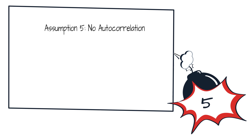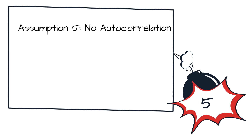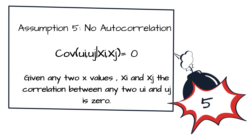The fifth assumption states that there is no autocorrelation between the disturbances. That is, Cov(ui, uj | xi, xj) = 0. Given any two x values xi and xj, the correlation between any two disturbances ui and uj is zero — basically, error terms are not correlated with each other. If they are correlated with each other, our linear regression model fails.